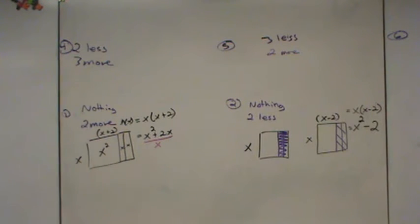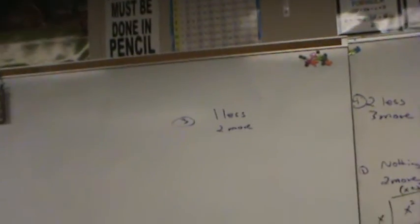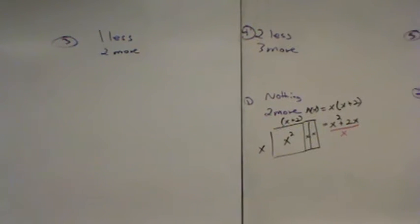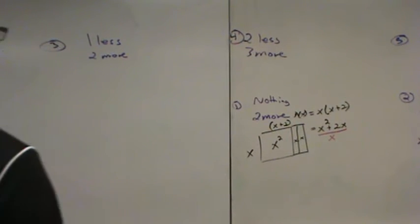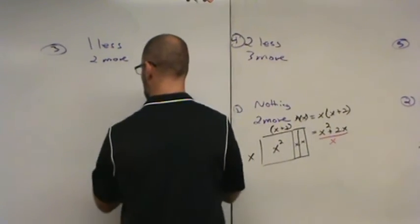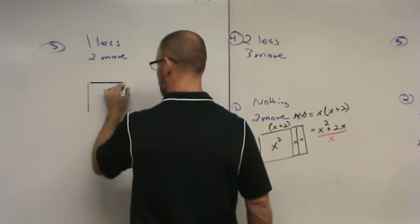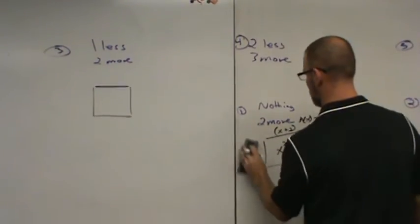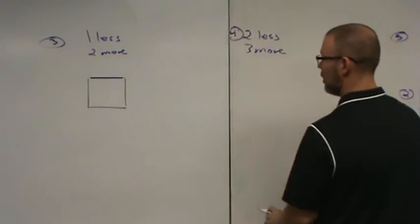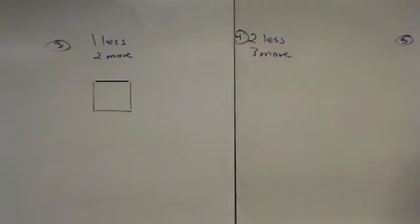All right, what if we go on to number three? Number three, if you look at that question, says, hey, what if I take one away from one side, but I add two to the other? Okay, so take a second and draw your original square. Pause the video and see if you can draw that. One less on one side, two more on the other.